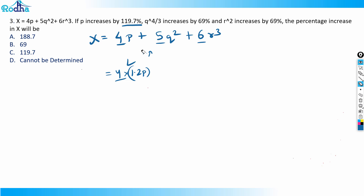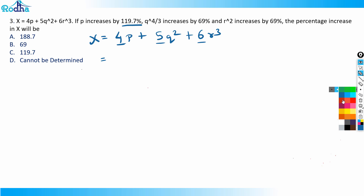So if x = 4p + 5q² + 6r³, and p increases by 119.7%, then the first term also increases by 119.7%. But I need to observe what happens to q² and r³. We've studied this in the percentage chapter — this is a good application of those concepts.